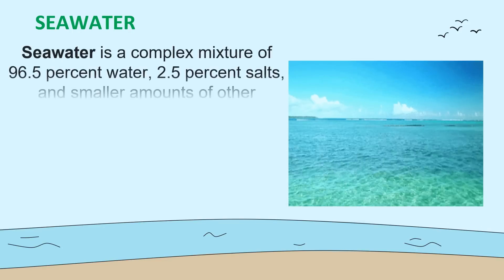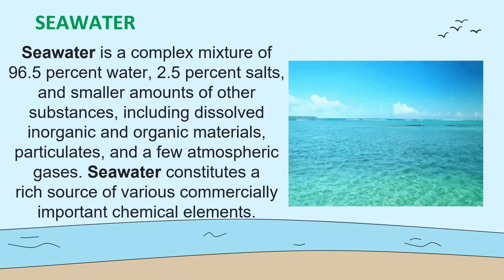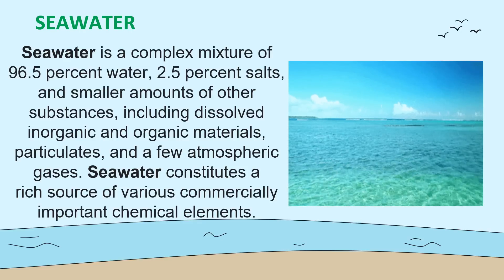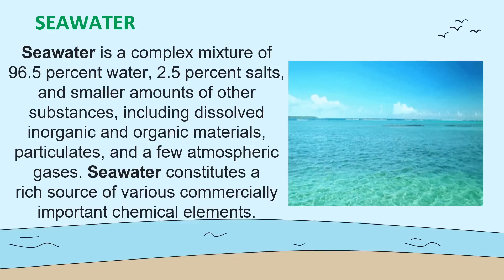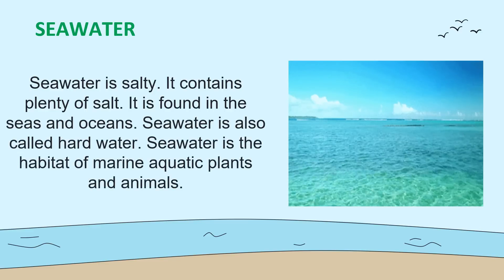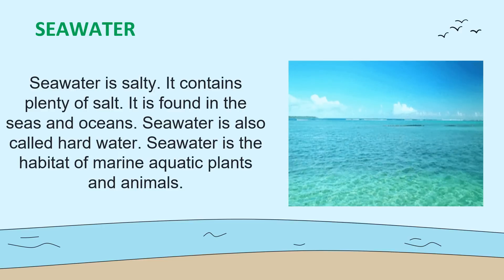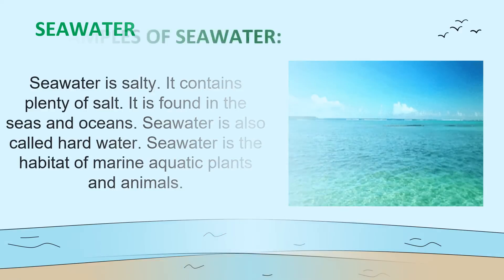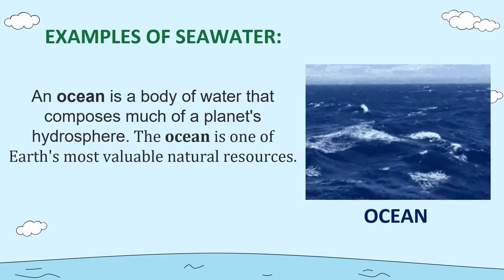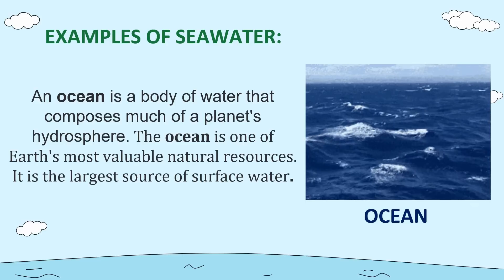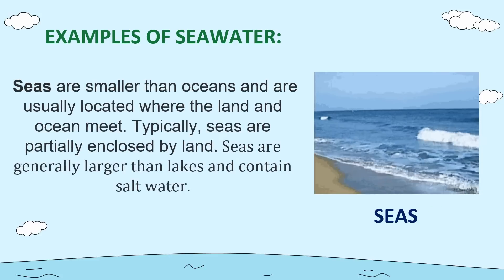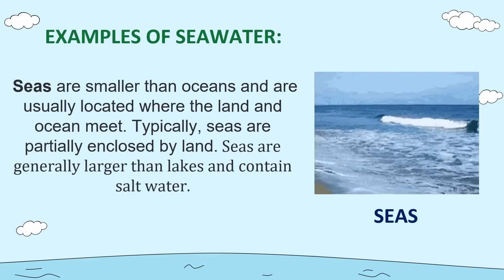Another major source of water is seawater. Seawater is a complex mixture of 96.5% water, 2.5% salts, and smaller amounts of other substances including dissolved inorganic and organic materials, particulates, and atmospheric gases. Seawater is salty and is found in the seas and oceans — also called hard water. Seawater is the habitat of marine aquatic plants and animals. An example is the ocean, which composes much of a planet's hydrosphere and is the largest source of surface water. Seas are smaller than oceans and are usually located where the land and ocean meet, partially enclosed by land.